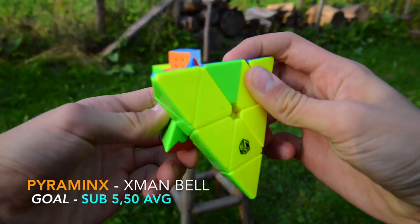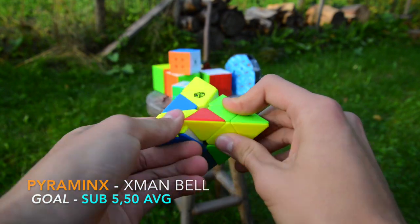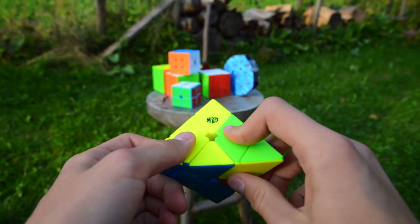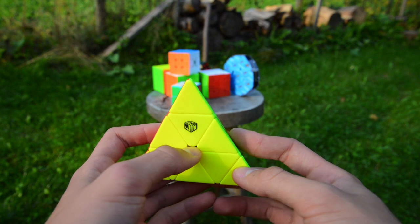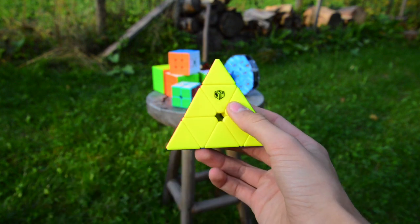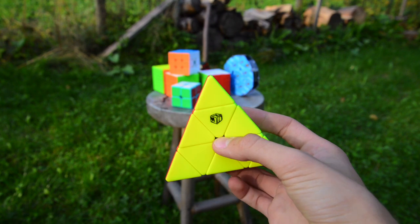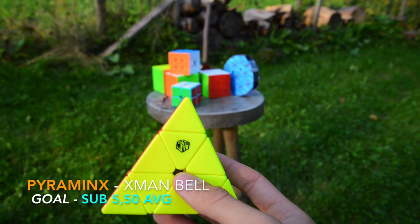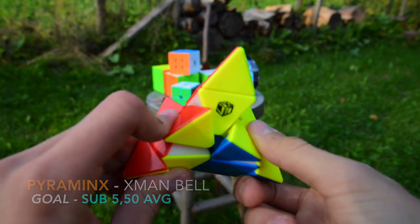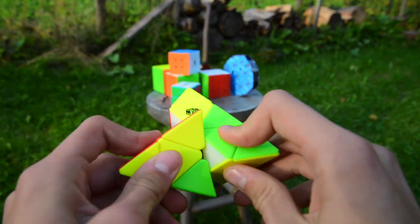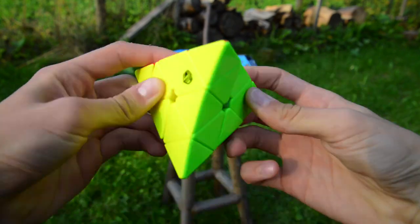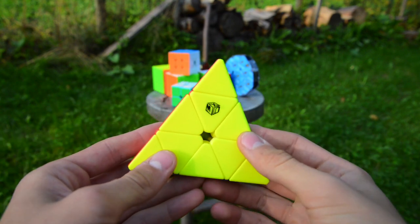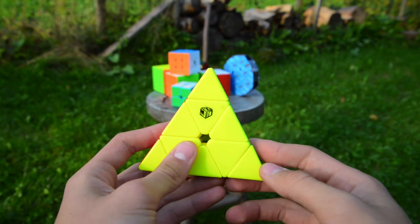Next up is pyraminx. This is the QiYi... no, yeah, I think this is QiYi. This is the QiYi X-Man Bell Pyraminx stickerless. Holy crap, this cube is bad. Oh my god, it's actually so bad that I stopped solving pyraminx at all for the past two months because look at this cube. Okay, first off, I'm going to tell you my goals. My goal is sub-5.50 average. I actually do not turn the pyraminx like that, and I use this kind of finger trick. That's weird, but it works. It got me second place in Latvia. As you can see why I hate this pyraminx.